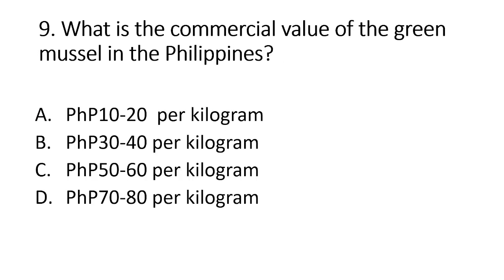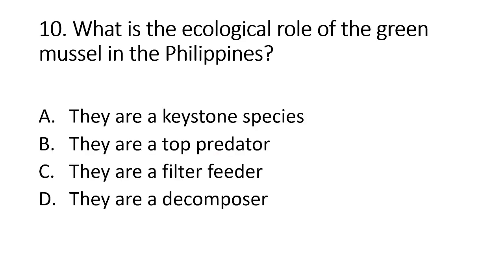Number 9. What is the commercial value of the green mussel in the Philippines? A. 10–20 pesos per kg. B. 30–40 pesos per kg. C. 50–60 pesos per kg. D. 70–80 pesos per kg. The answer is letter C, mussels are usually sold at 50–60 pesos per kg. Number 10. What is the ecological role of the green mussel in the Philippines? A. They are a keystone species. B. They are a top predator. C. They are a filter feeder. D. They are a decomposer. The answer is letter C, mussels as filter feeders can help purify the water.